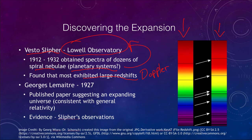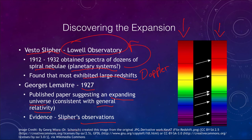Slipher found that all these galaxies were moving away from us. Georges Lemaître in 1927 published a paper suggesting an expanding universe, which was consistent with general relativity — although Einstein had added a cosmological constant to make it so that the universe did not necessarily expand. Lemaître used Slipher's observations as his evidence, making this some of the very earliest evidence of the expansion of the universe.